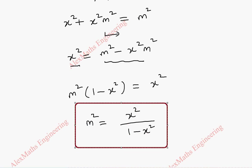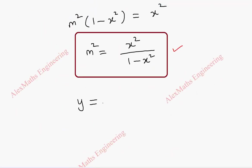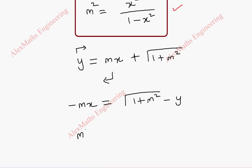From this, we get m² = x² / (1 − x²). Since we have m², to avoid the plus-or-minus from taking a square root, we keep m² as it is and replace m² in the curve. We rearrange the original equation y = mx + √(1 + m²) by taking mx to the other side: −mx = √(1 + m²) − y. Squaring on both sides gives m²x² = (√(1 + m²) − y)².